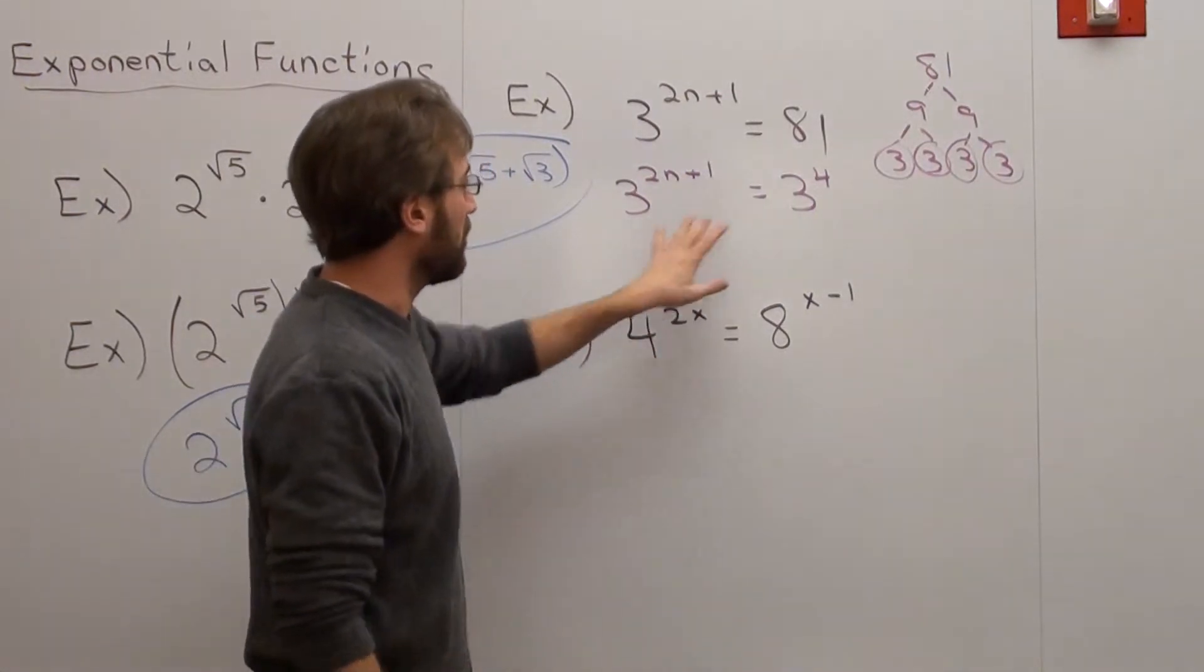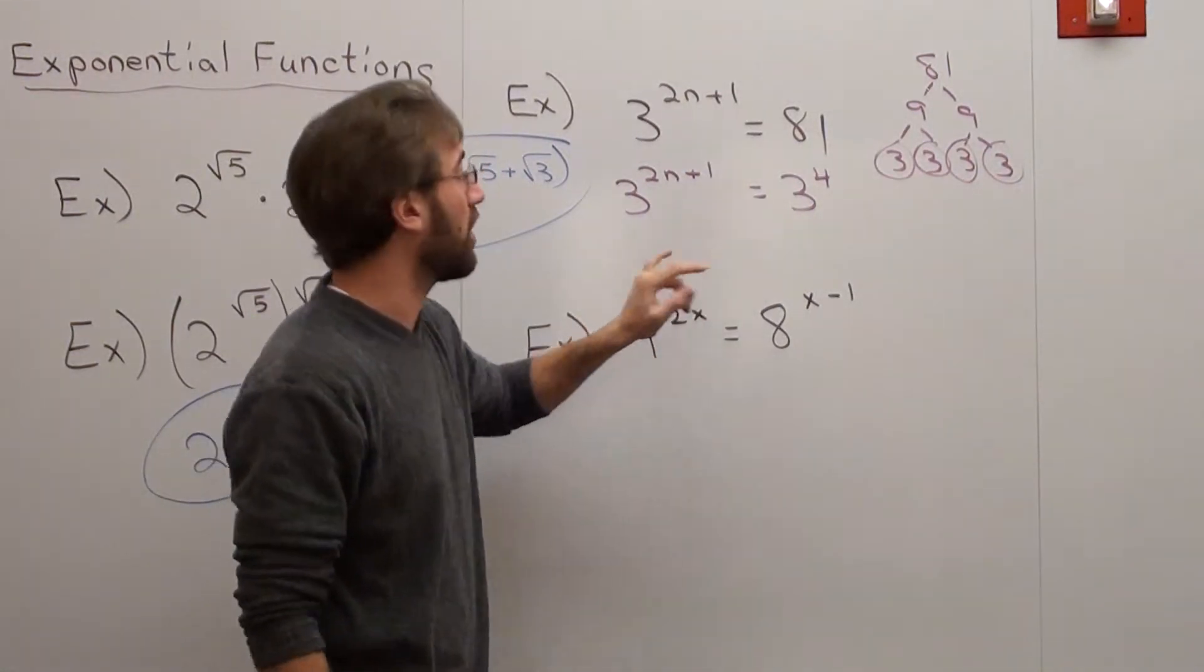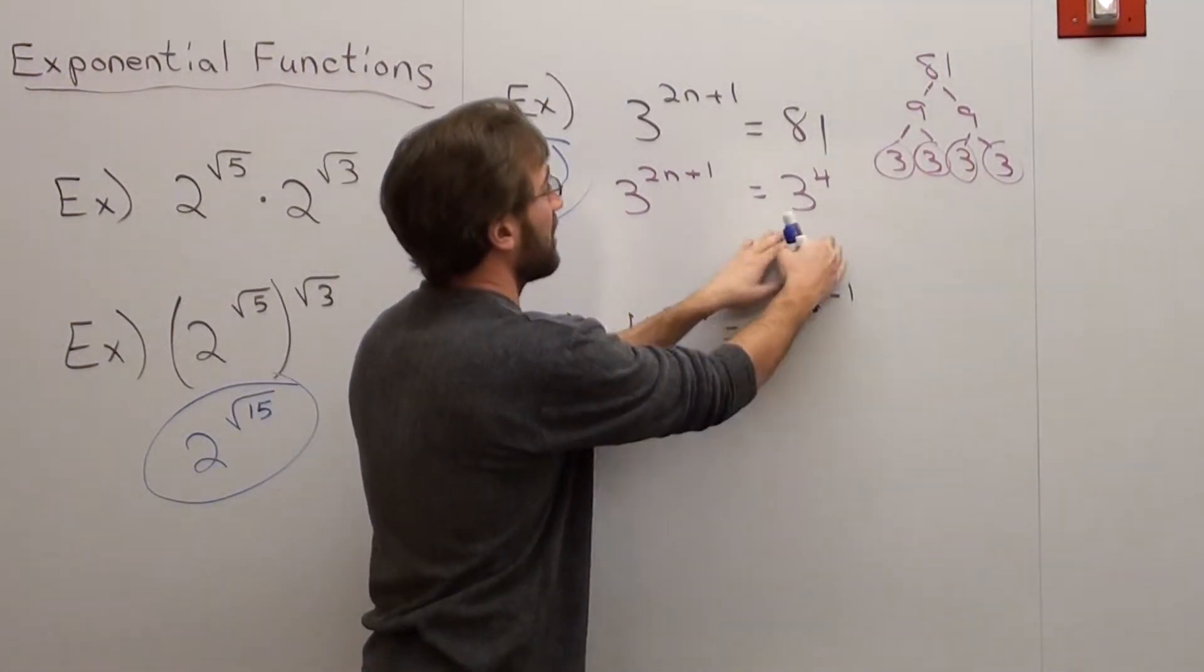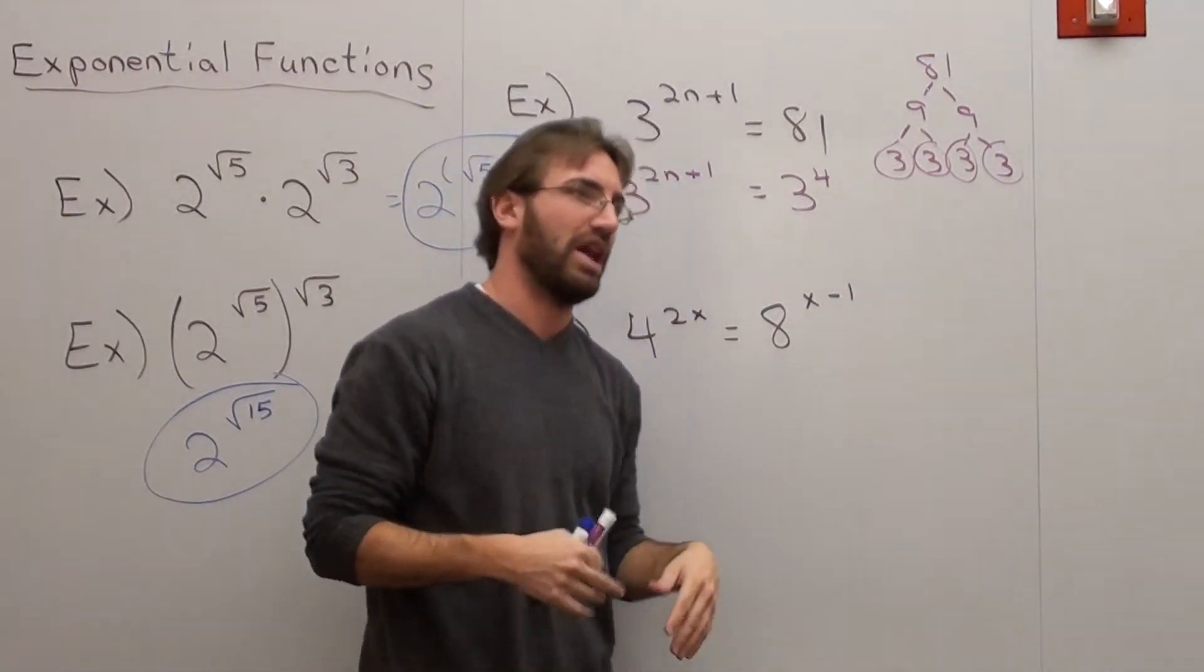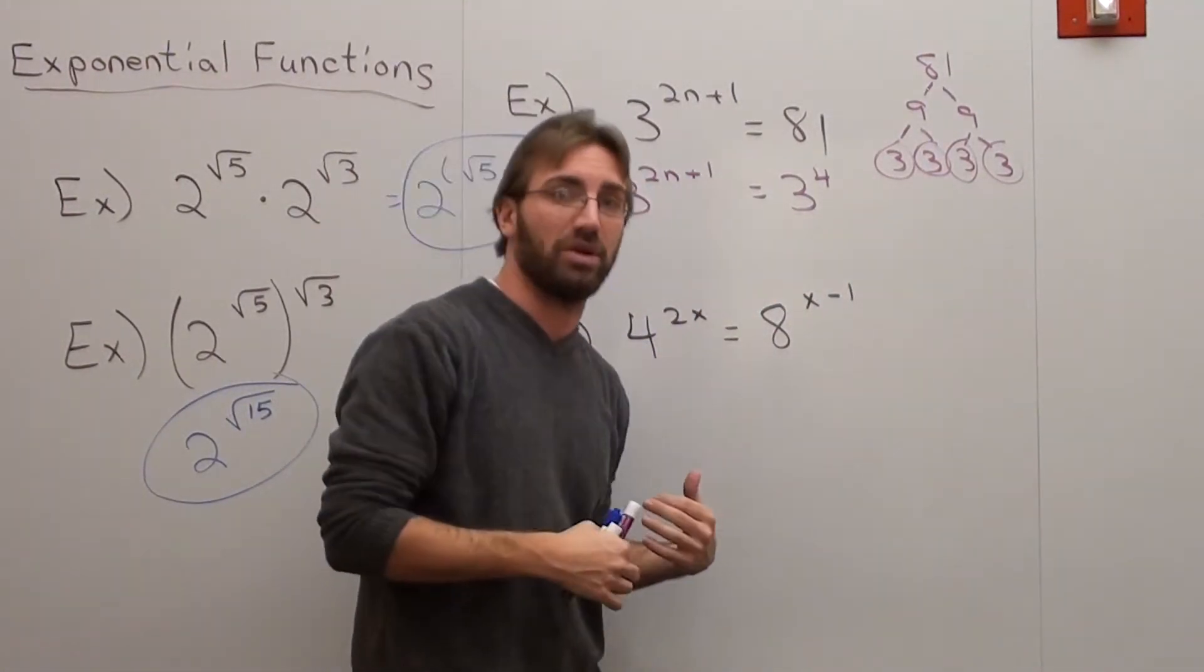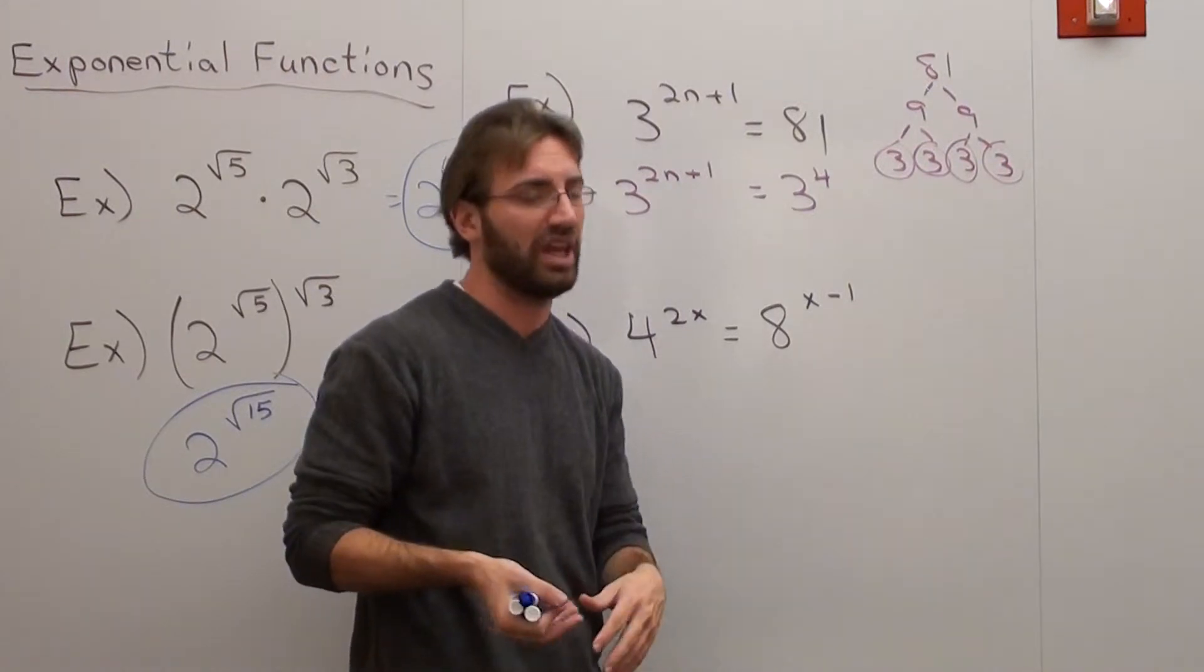Now what's very interesting is this. When you have an equation like this where you have a base on one side equaling a base on another and they're the same, you can cancel them out. Actually, what you would do is take the log of 3 on both sides, but since we haven't actually introduced that yet, it's fine.